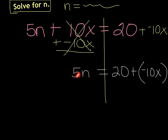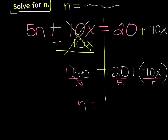We've got to try to get rid of this 5. These are connected by multiplication, so do the opposite of multiplying by 5 and divide by 5. On this side it's nice because 5 divided by 5 is 1, so I just have 1n equals. Over here, you have to divide every single thing on this other side by 5 — divide this by 5 and this by 5. So I'm going to do 20 divided by 5, which gives me 4, plus negative 10x divided by 5 — well, 5 goes into that negative 2x.